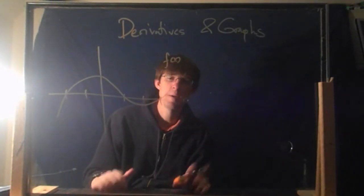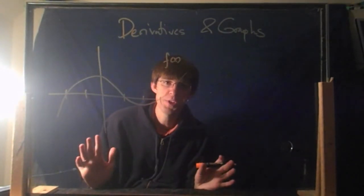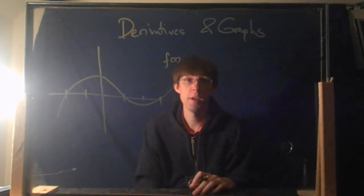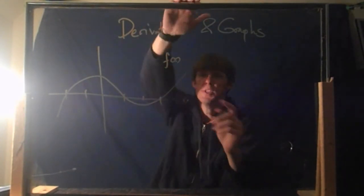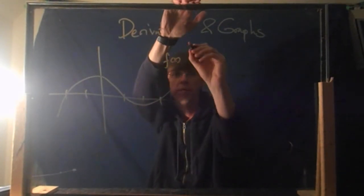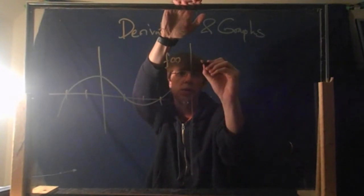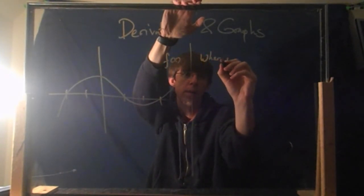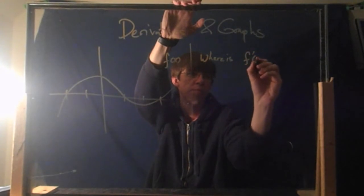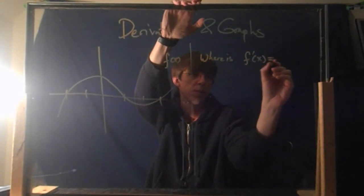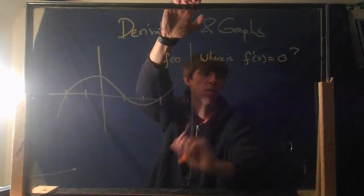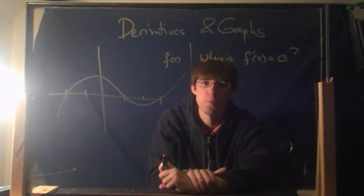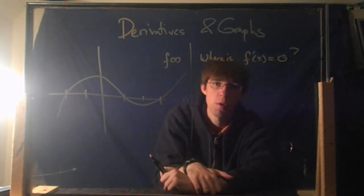Here's a function f of x. I'm not going to give you an equation for this — this is just some curve that I drew. You can still answer some questions about the derivative, though. Where is f prime of x equal to 0? I would like to know where are the x values when the derivative is 0?